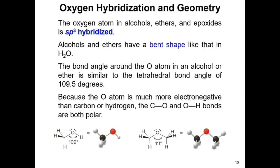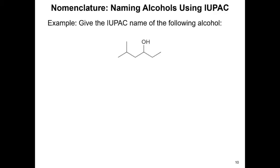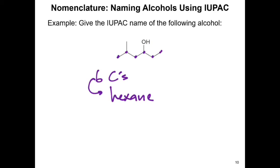How do we name alcohols using the IUPAC system? The first step is to identify the longest carbon chain. Here we have 6 carbon atoms, so the alkane is hexane. Then replace the suffix '-e' with '-ol' to get hexanol.